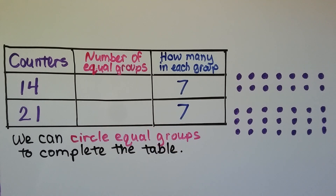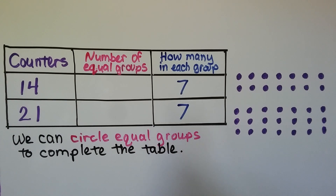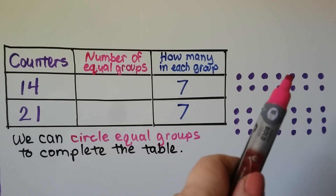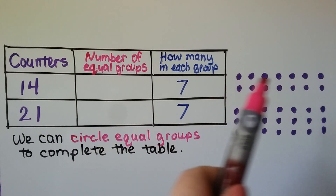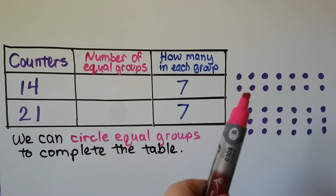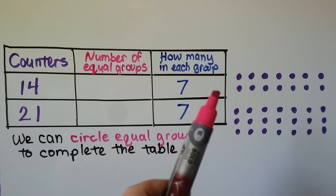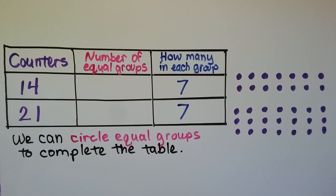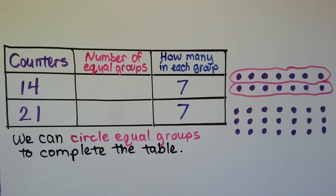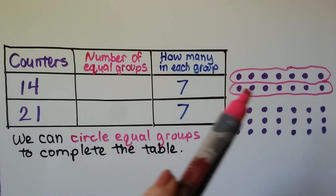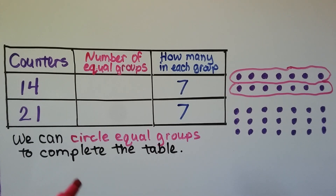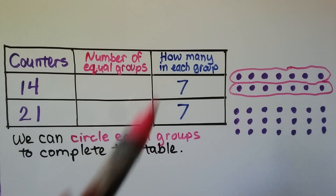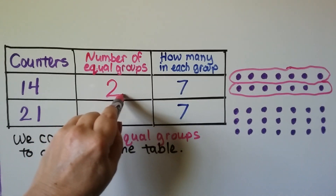We circle equal groups to complete the table. For fourteen counters with seven in each group, we circle seven to make one group of seven, then circle another seven. Two groups of seven equals fourteen counters — that's two equal groups.